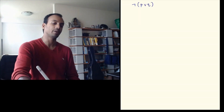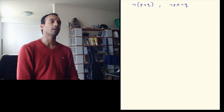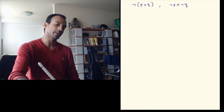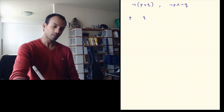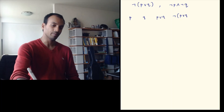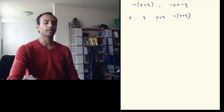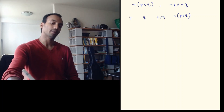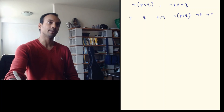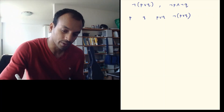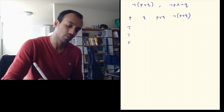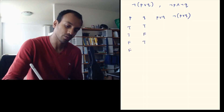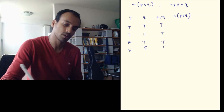Consider ¬(p∨q) and ¬p∧¬q — I claim these are equivalent. Let's write the truth table to verify, even though we did this before. I set up columns for p, q, then p∨q, then ¬(p∨q). Step by step, I first write p∨q and then apply negation. Then I compute ¬p and ¬q separately. Let's write: true-true, false-false, true-false, false-true as the rows.